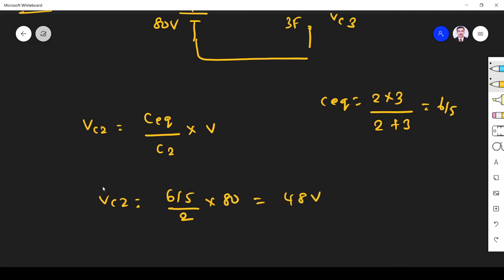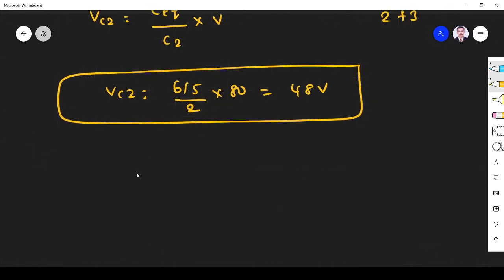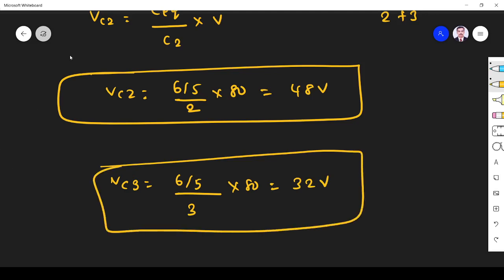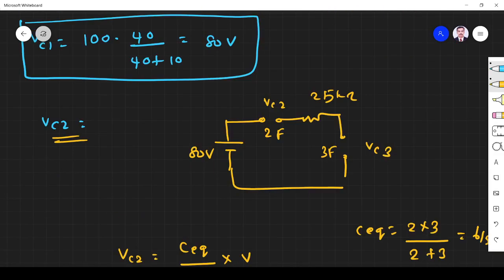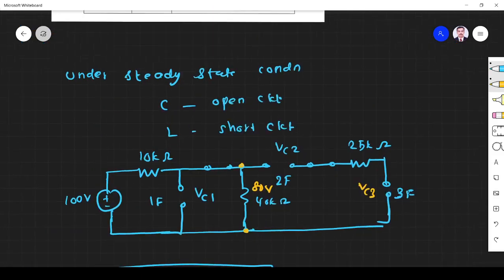Similarly VC3 is C equivalent, again 6 by 5 divided by C3, now it is C3 is 3 farad into total voltage. So 2 by 5, 16, so it is 32 voltage. So VC2, VC3, VC2 48, VC3 32. So 48, 32.